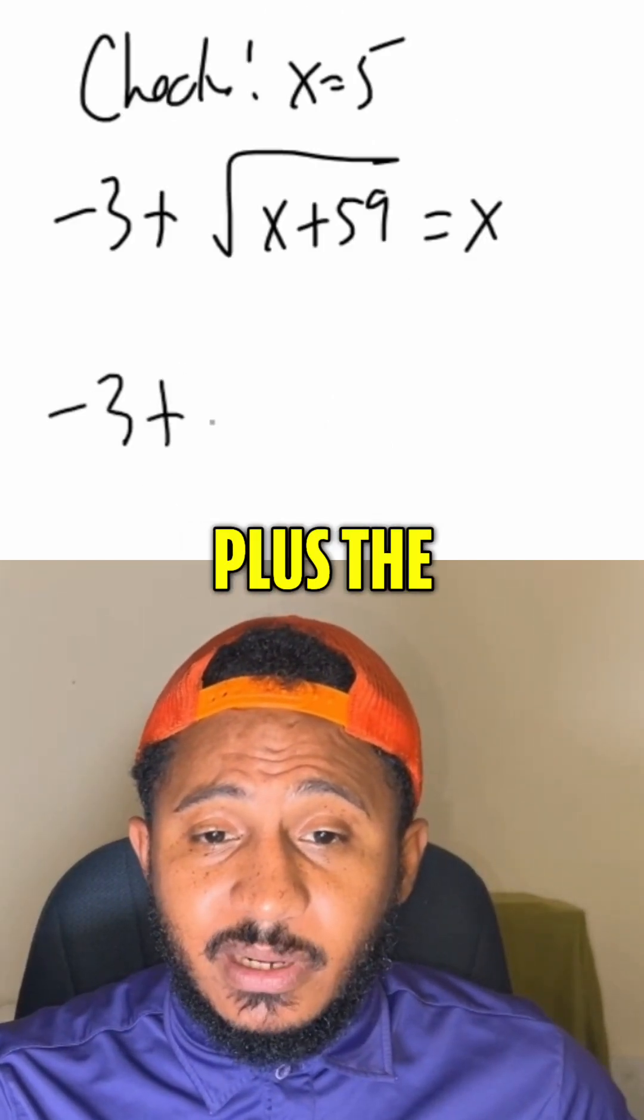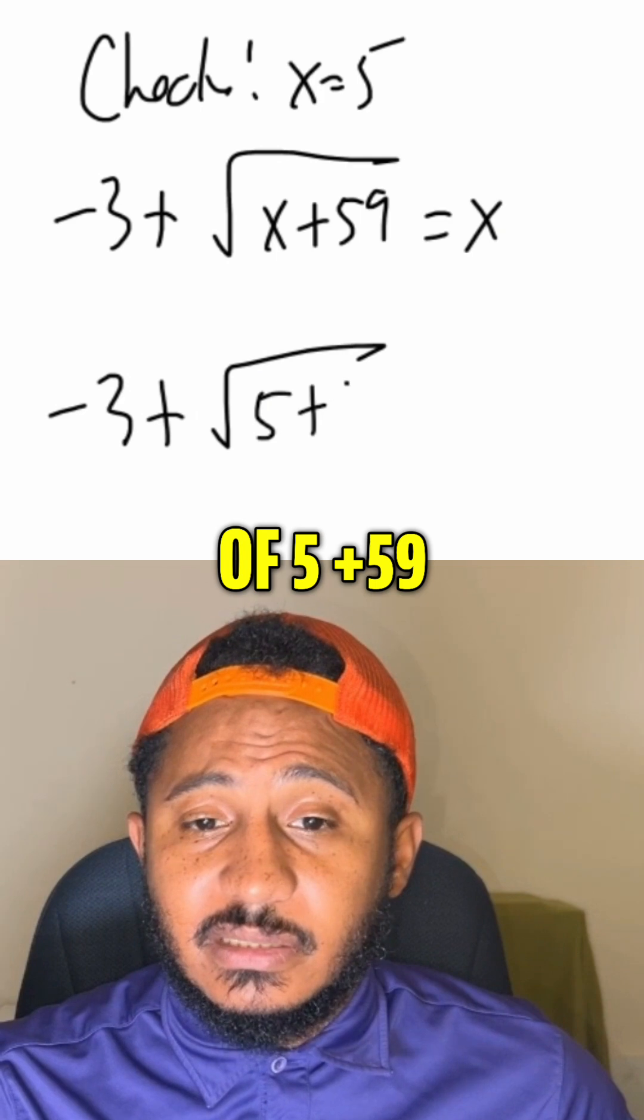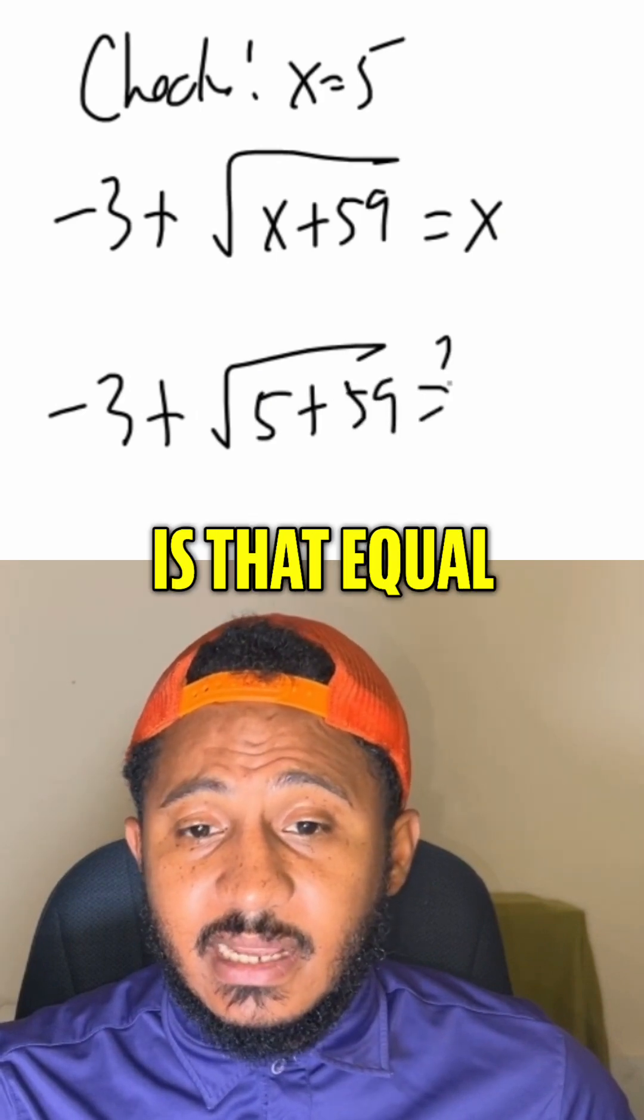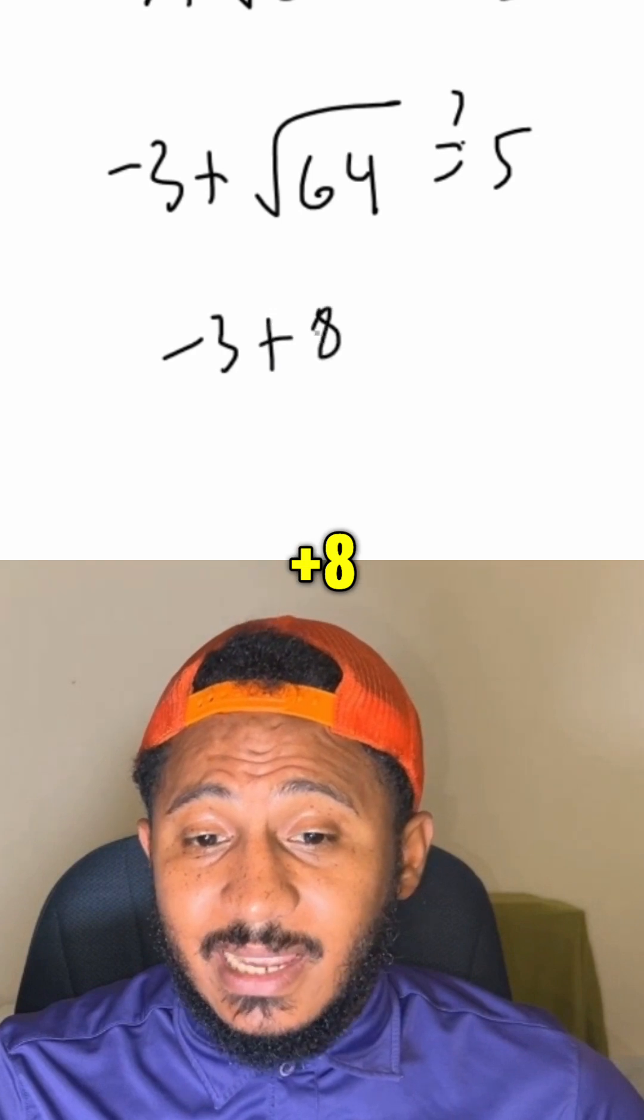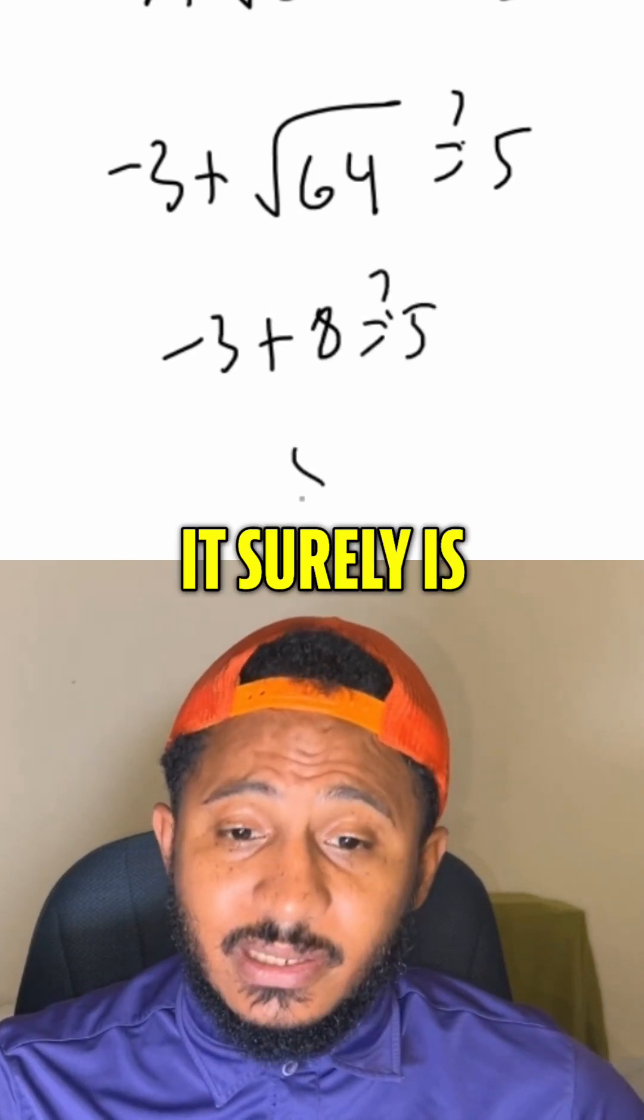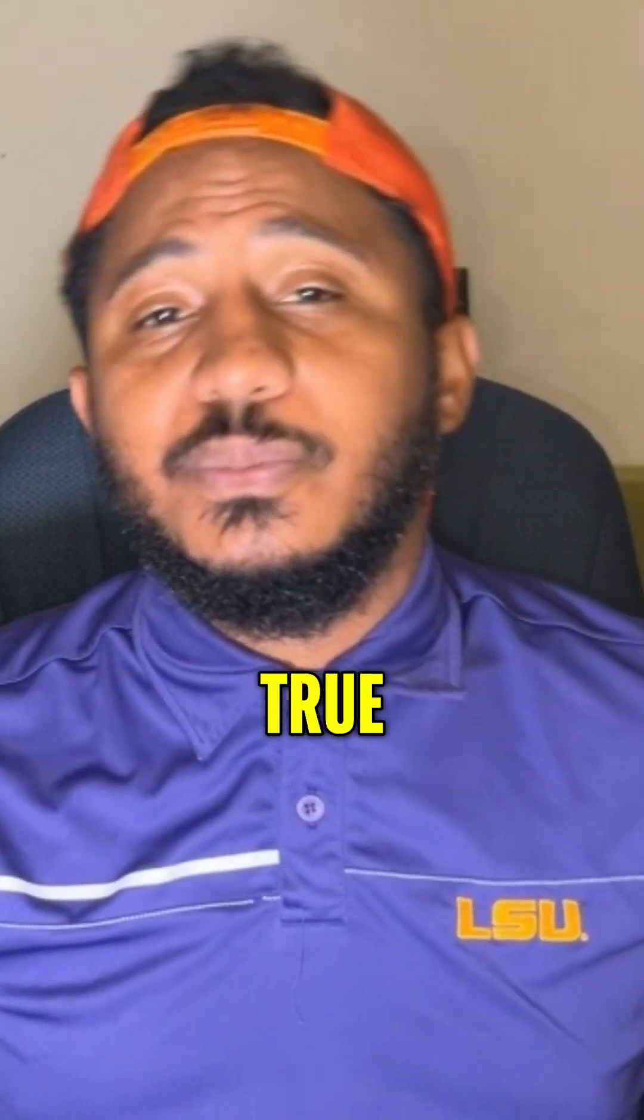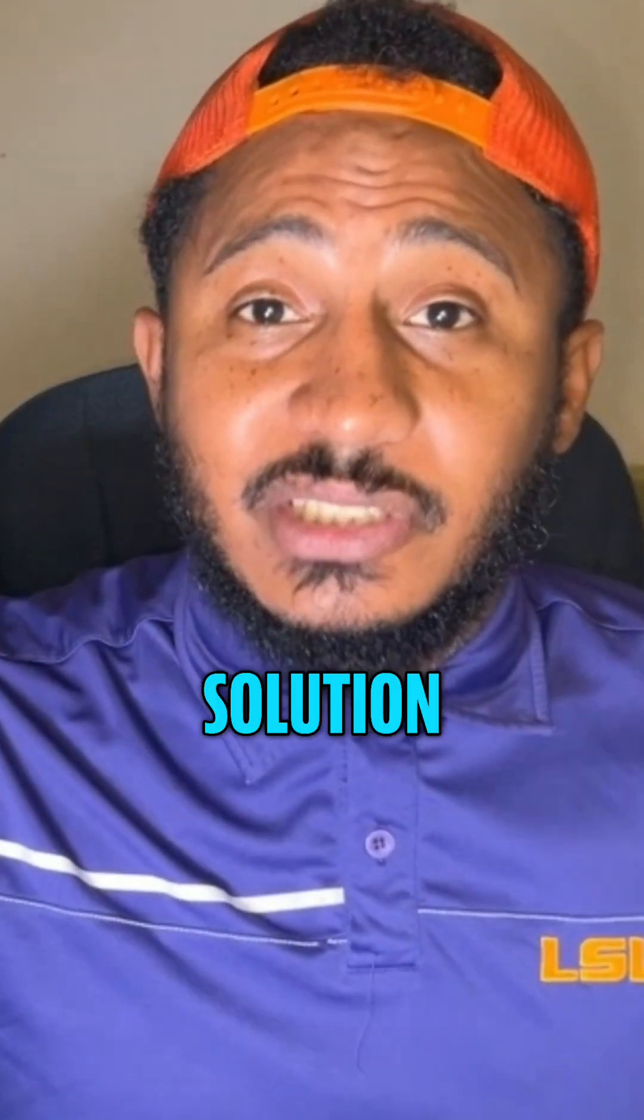All right, so plug in 5, we get negative 3 plus the square root of 5 plus 59. Is that equal to 5? Well, square root of 64 is 8, so negative 3 plus 8, is that equal to 5? It sure is, because 5 equals 5. All my life, that's been true. So 5 is a solution to this equation.